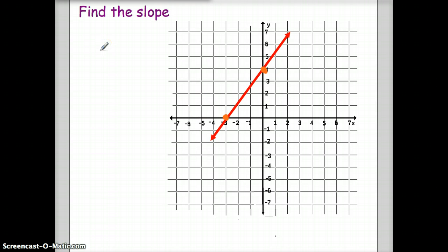Remember we said that slope was rise over run. So if I go from the point on the left to the point on the right, I'm going to rise 1, 2, 3, 4. And I'm going to run 1, 2, 3. So my slope, again, is rise over run. So that's just going to be 4 over 3.